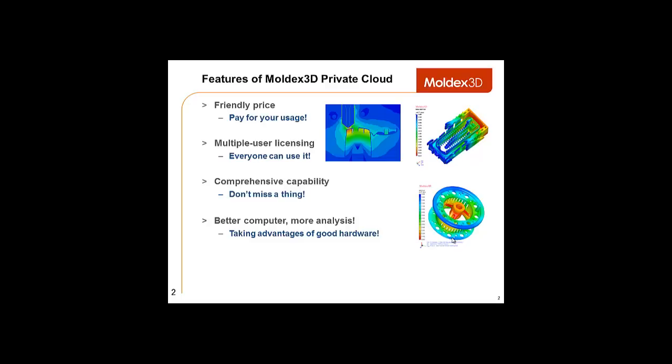As far as the capability, our software simulates flow, cool, pack warp analyses, as well as multi-component molding. And lastly, the hardware. The private cloud allows you to take advantage of good hardware by allowing you to use a lower level computer system to connect with a high level computer system and run an analysis.